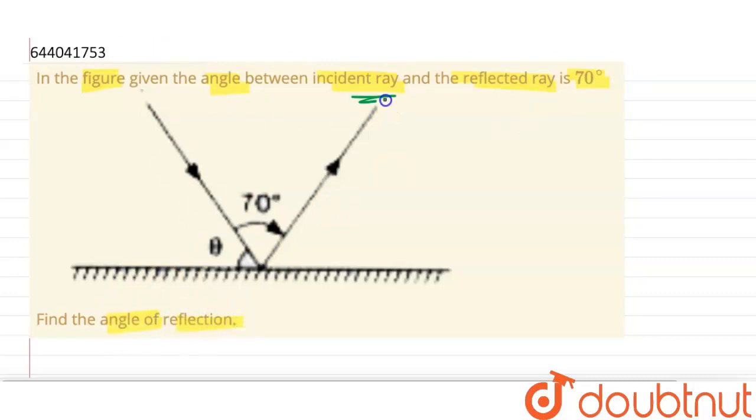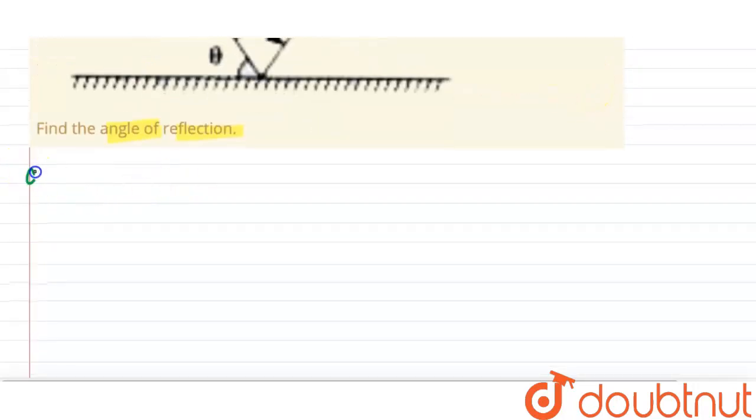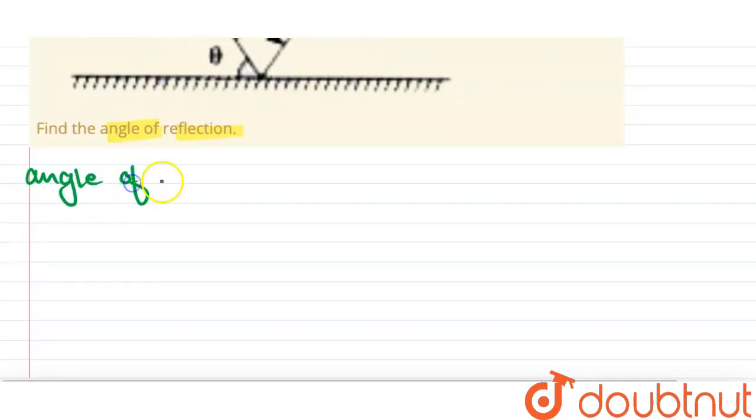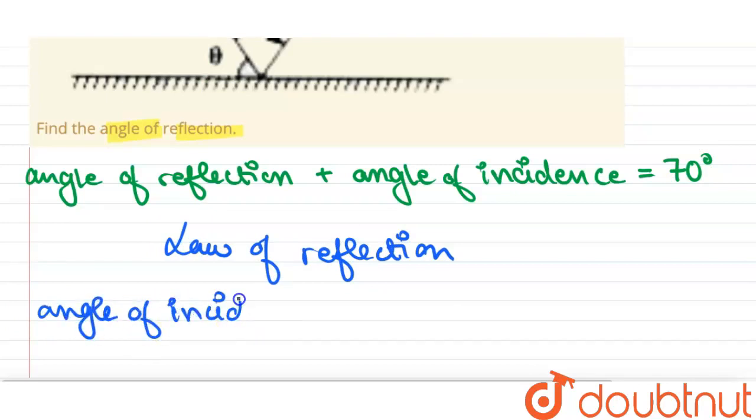Alright, so angle between incident ray and reflected ray is given to be 70 degrees. That is angle of reflection plus angle of incidence is equal to 70 degrees. And we know from law of reflection that angle of incidence is equal to angle of reflection.